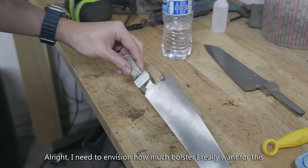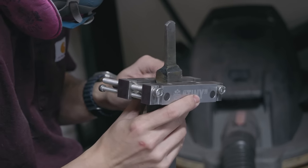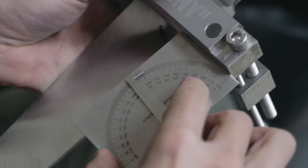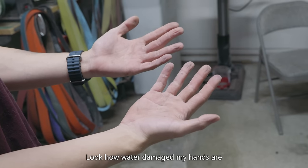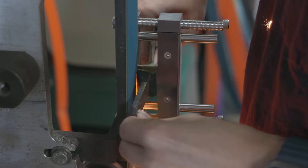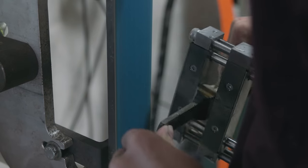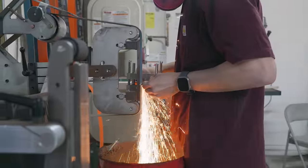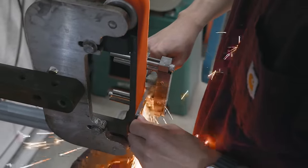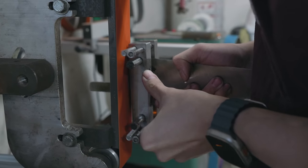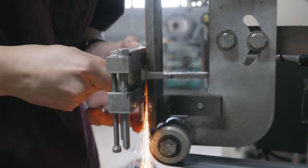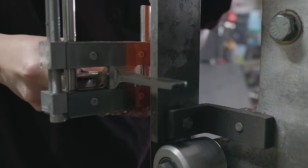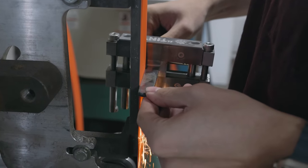All right, I need to envision how much bolster I really want for this. Generally for my integral bolster knives, I leave the bolster pretty long. But because this handle is going to be entirely rounded, I wanted to leave it a little bit shorter. Look how water damaged my hands are. If I had a mill right now, this step would be around 20 times faster and about 10 times less painful. But because I don't have a mill, I have to carefully use the sides of the platen to try and carve out that 90 degree angle as best I can. I actually have to use a bunch of different grits here because different grits of belt have different radiuses on the sides of the belt. A 36 grit belt is good for hogging off a lot of material, but when you want to get into tight corners like this, you want to use something at least at a 120 grit.